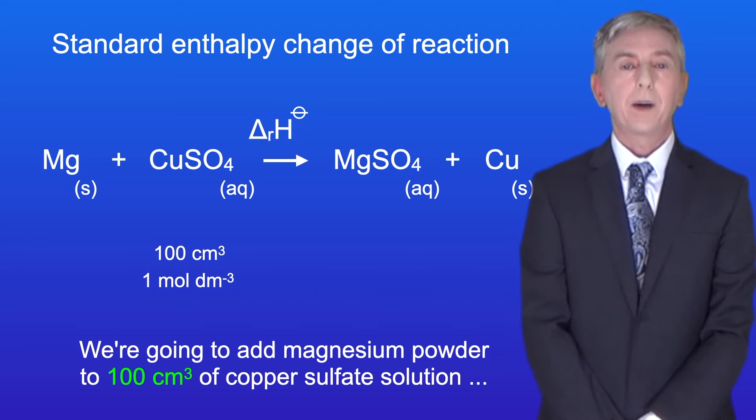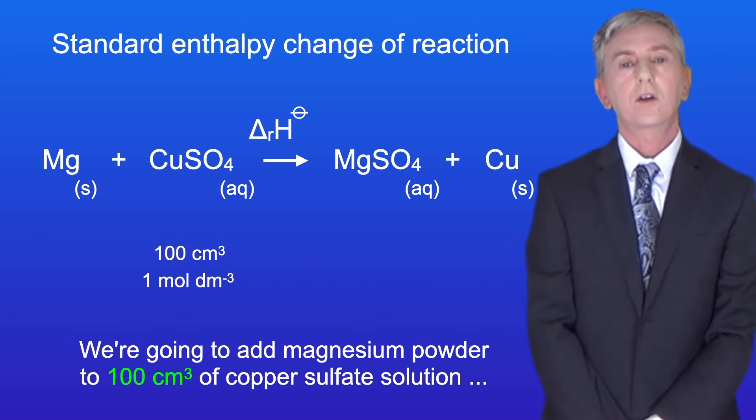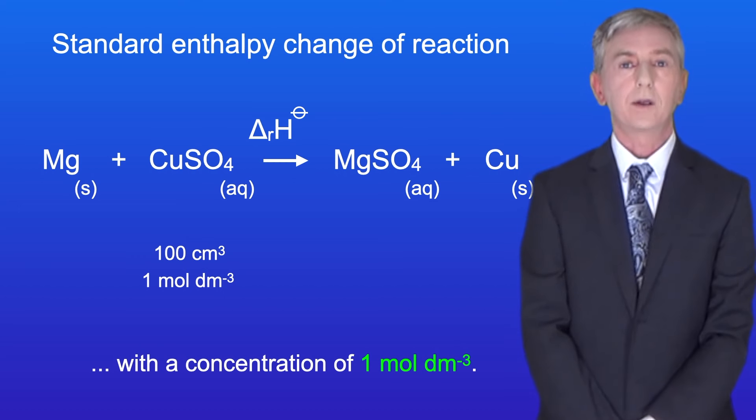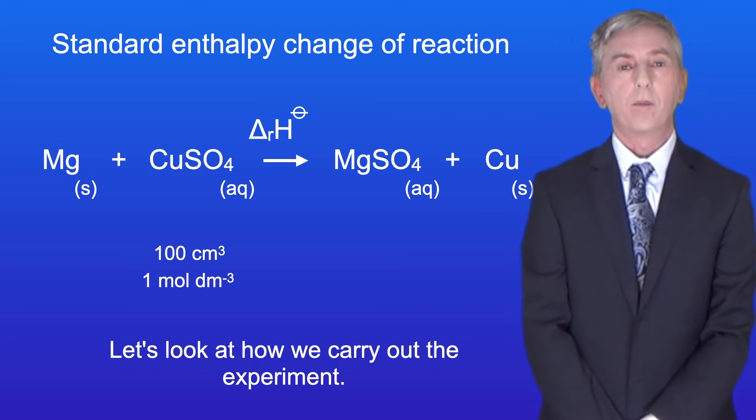We're going to add magnesium powder to 100 centimeters cubed of copper sulfate solution with a concentration of 1 mole per decimeter cubed. So let's look at how we carry out the experiment.